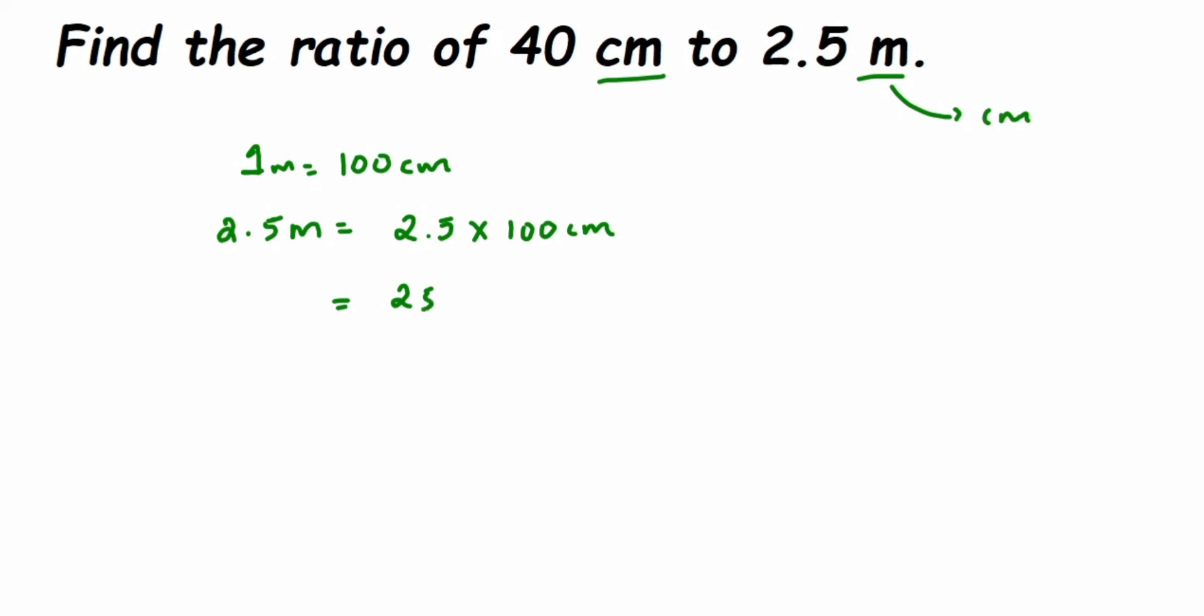So 250 centimeter. Now we have it in centimeter. So 40 centimeter is to 250 centimeter can be written as 40 upon 250. When you're writing the ratio, we don't write the units, but I have written here just to show that both are in centimeter.